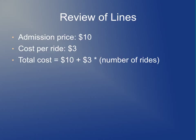Say there's an amusement park and it costs $10 to get in. Every time you go on a ride, it costs $3. The total cost will be $10 plus $3 times the number of rides.